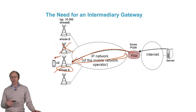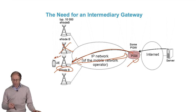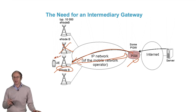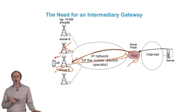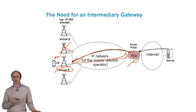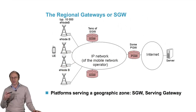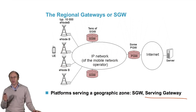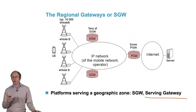This rerouting requires the exchange of signaling messages. To avoid frequent rerouting at the level of the P-Gateway, we'll introduce intermediary equipment called the Serving Gateway. The Serving Gateway serves a given geographic zone, typically one French region.